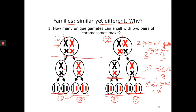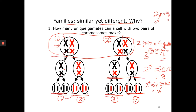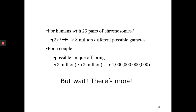This phenomenon of different combinations of homologous chromosomes is called random assortment, and it's the second source of genetic diversity. Humans have 23 pairs of homologous chromosomes, for a total of 46. If you are making gametes — either sperm or eggs — 2 to the 23rd power means you can produce more than 8 million unique gametes, each carrying a different combination of chromosomes.